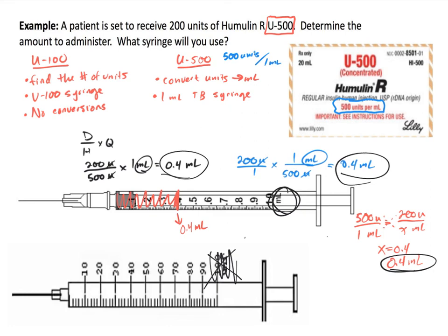To summarize: we are dealing with insulin, but it's U500. With U500, we do need to do a short conversion into mL and use the TB syringe. This is different from U100, where no calculations or conversions are needed — you just choose the correct syringe and mark the number of units.